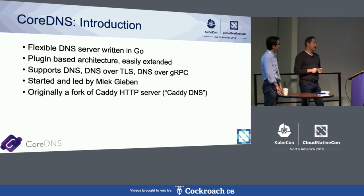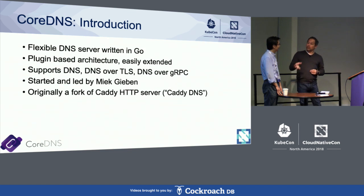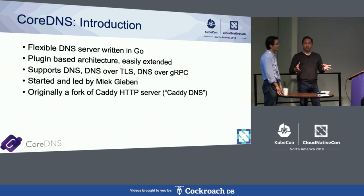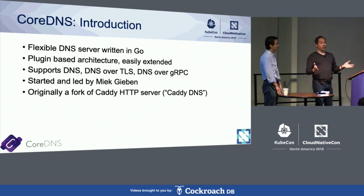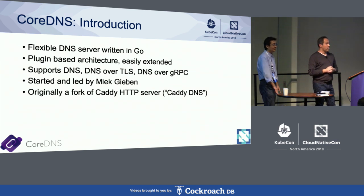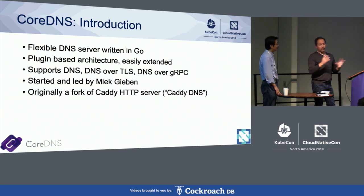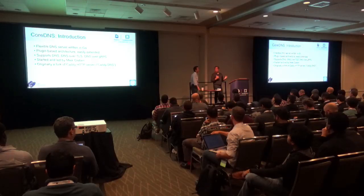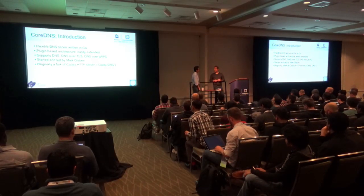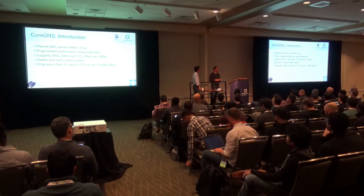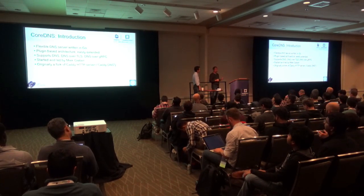CoreDNS has a plugin-based architecture that is very easily extended. There's a session later on where John Belamaric and others will talk about how to write a plugin. But even if you're not comfortable writing plugins, there are lots of plugins already available — about 34 different plugins shipped as part of CoreDNS today that perform all kinds of different functions. There's even a list here in case you want to jot them down.